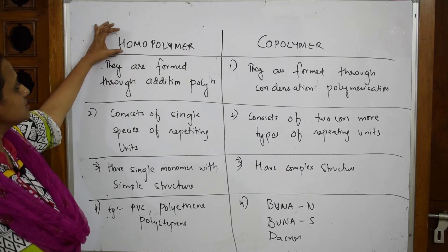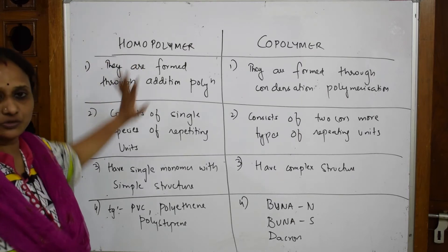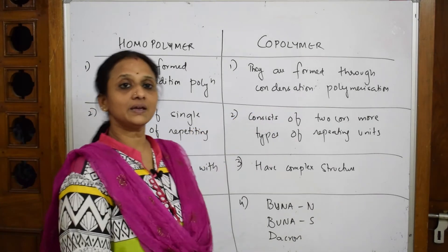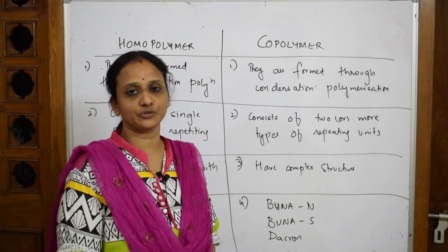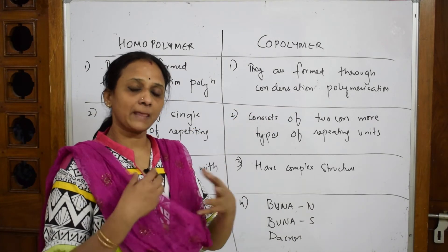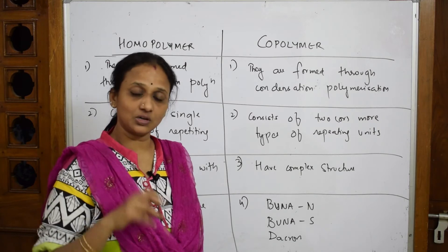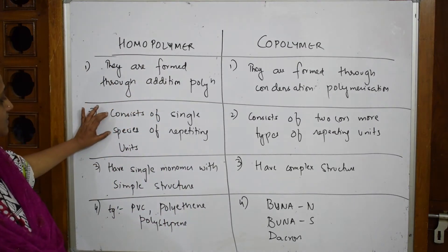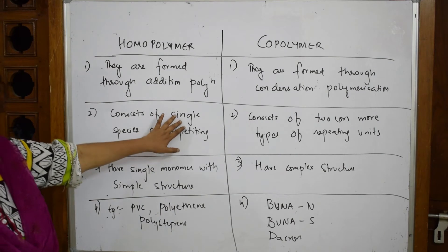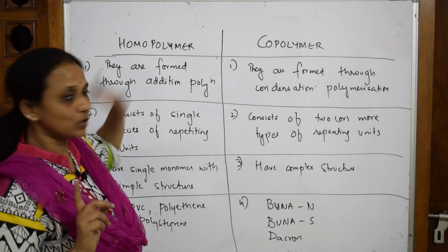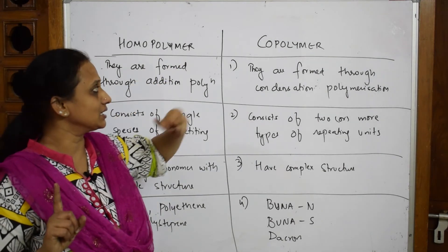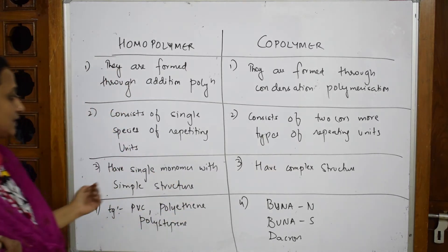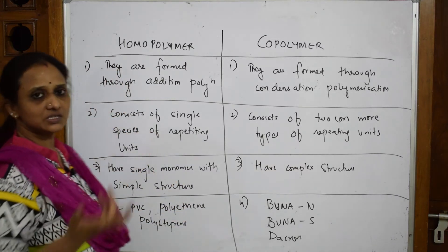As the name suggests, homopolymers are formed by addition of compounds, while copolymers are formed by condensation of compounds — condensation where you're removing a water molecule, alcohol, ammonia, or HCl. A homopolymer has only a single entity, a single monomer, as 'homo' means single. A copolymer has two or more repeating units, as 'co' means two.